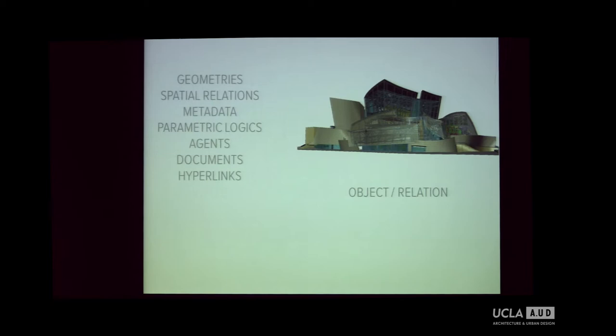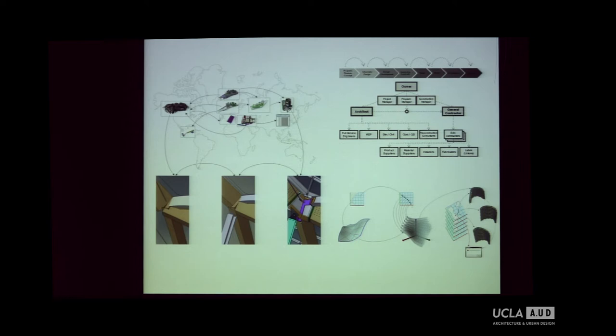We can now have computers move from plan to section to 3D to table, so there's the notion of multiple possible descriptions and the ability for a computer to traverse between these different languages - I think that's central to this notion. There are an awful lot of objects and relations that are candidates for this network: geometric objects, spatial relations of rooms, metadata like fire ratings, parametric logics, agents, people, documents, hyperlinks. We're starting to move to what is, from a computational perspective, a very interesting mix of spatial and non-spatial objects in a network of relations - and that's the network that architecture is in the business of manipulating.